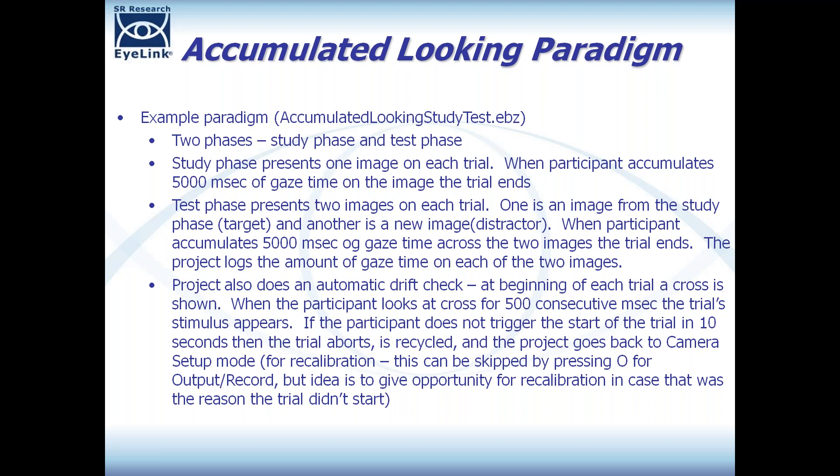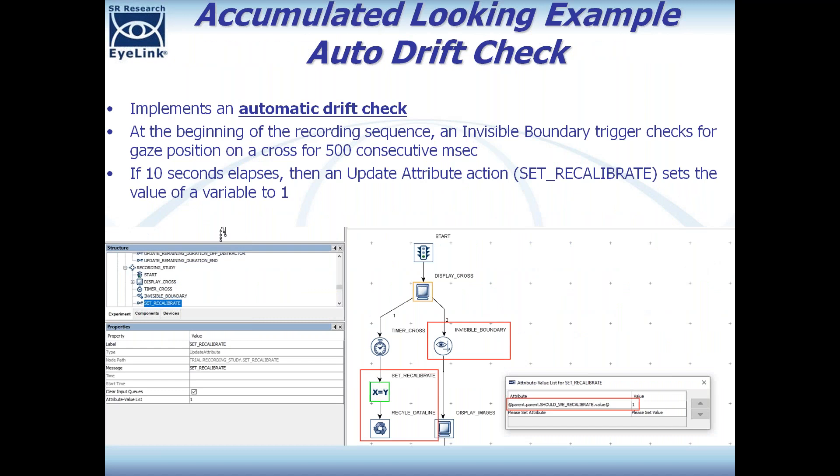If the participant doesn't look at the cross for 500 consecutive milliseconds within the first 10 seconds, the trial aborts and is recycled back into the queue. The project then goes back to camera setup mode so the eye tracker can be recalibrated, since the failed trial may indicate a calibration issue. If recalibration isn't needed, you can just press O to skip it and start the next trial.